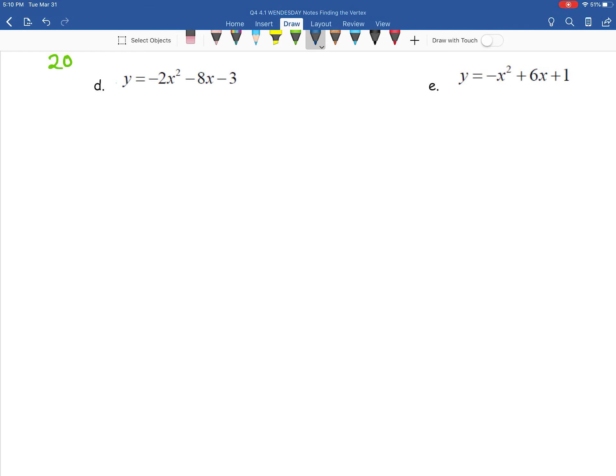Here we are at example 2D from our 4.1 set of notes. We're going to start off by identifying our A, B, and C. And there they are. And we're going to go ahead and write out our vertex formula. So x equals the opposite of b over 2 times a.